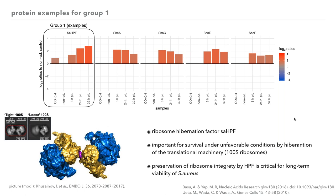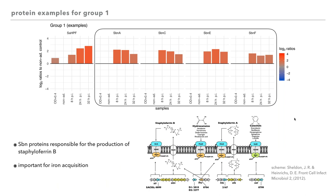Starting with group one: SAHPF, a ribosome hibernation factor, is strongly increased over the course of infection. It is very important for survival under unfavorable conditions by hibernation of the translational machinery and forming 100S ribosomes. It preserves ribosome integrity and is critical for long-term viability of S. aureus. Also in group one, the SBN proteins are staphyloferrin B biosynthesis enzymes responsible for the production of staphyloferrin B, which is important for iron acquisition.